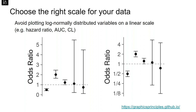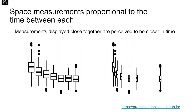Choose the right scale for your data. Try to avoid plotting log-normally distributed variables on a linear scale — this can lead to misleading interpretation, especially when you introduce lines and encode uncertainty. In this example, the uncertainty appears to increase above one (unity), but this is an artifact of the choice of scale. Using a log scale resolves this issue. Another important aspect related to this is time and how it is displayed. Space measurements proportionally to the time they were measured — measurements displayed close together are perceived to be closer in time. Not reflecting this could introduce a visual bias, where slopes or trajectories may appear steeper or less so than they typically are.